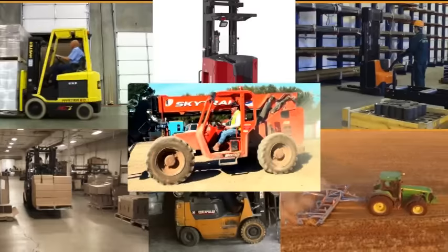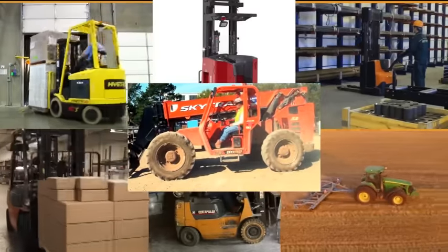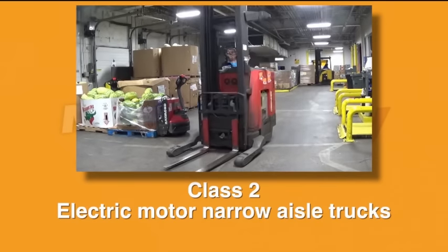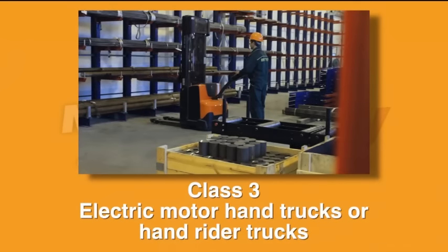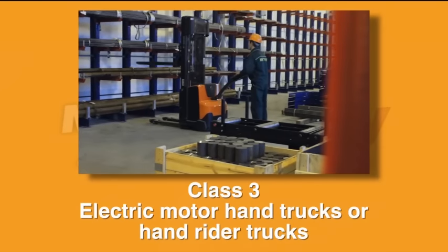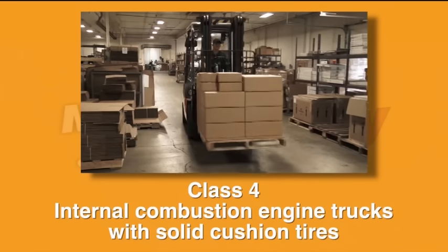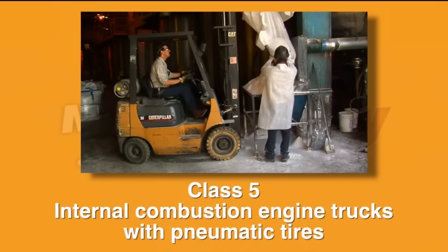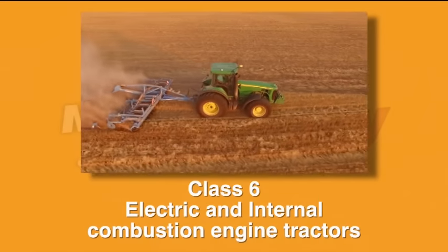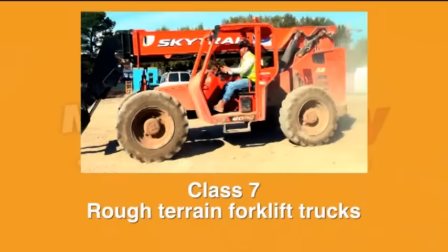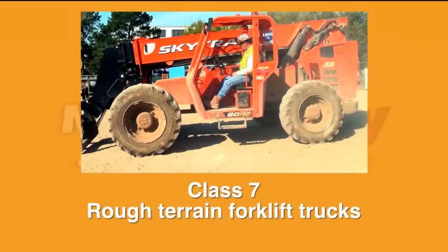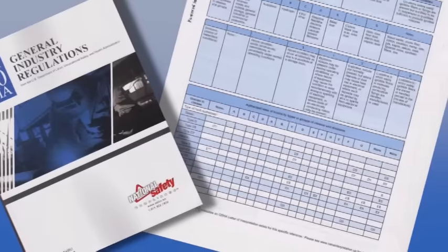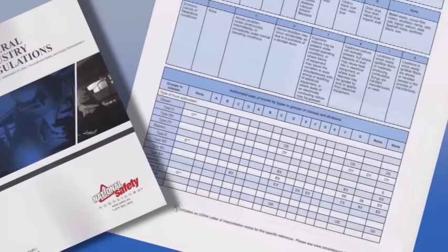Forklift types. There are seven classes of commonly used powered industrial trucks: Class 1 — electric motor rider trucks; Class 2 — electric motor narrow aisle trucks; Class 3 — electric motor hand trucks or hand rider trucks; Class 4 — internal combustion engine trucks with solid, cushioned tires; Class 5 — internal combustion engine trucks with pneumatic tires; Class 6 — electric and internal combustion engine tractors; and Class 7 — rough terrain forklift trucks. This classification does not include all powered industrial trucks covered by OSHA Standard 29 CFR 1910.178, but the most common.